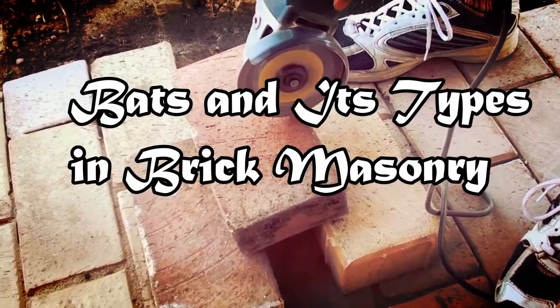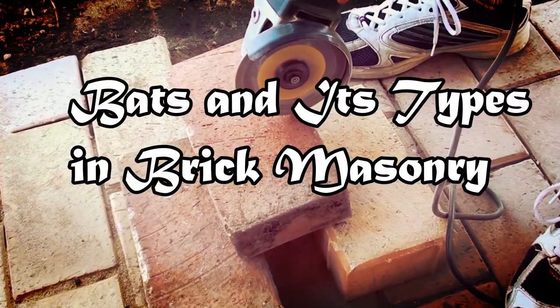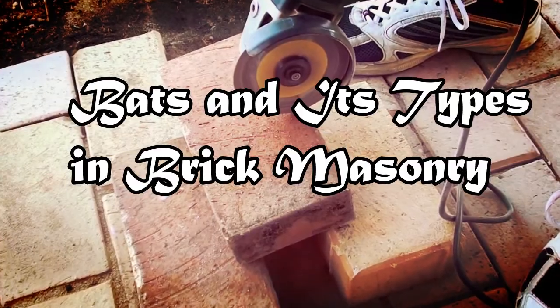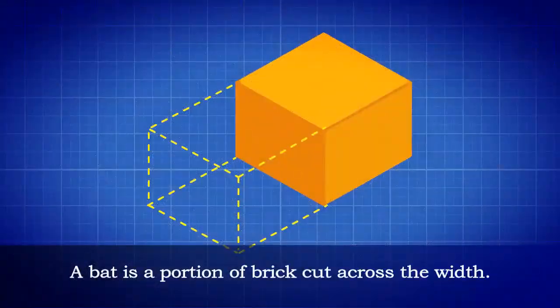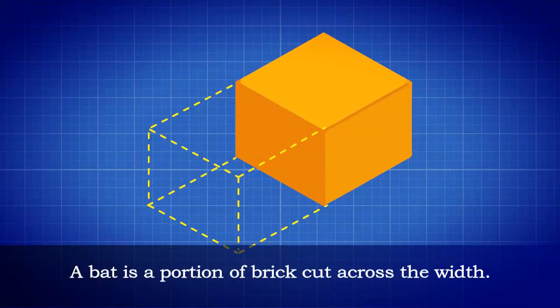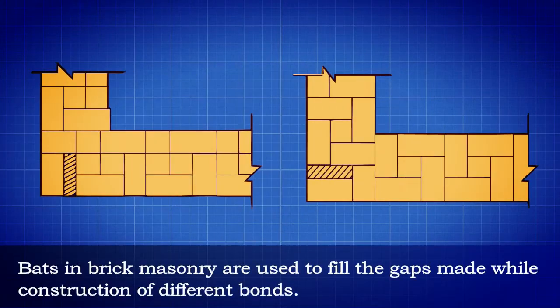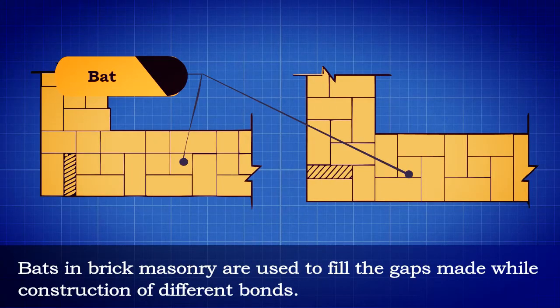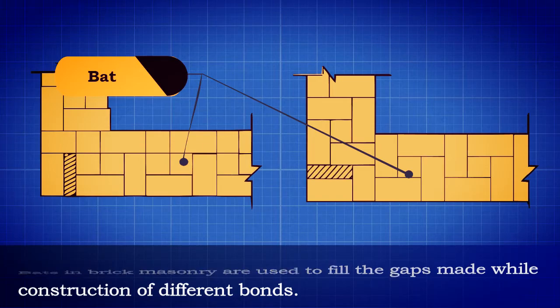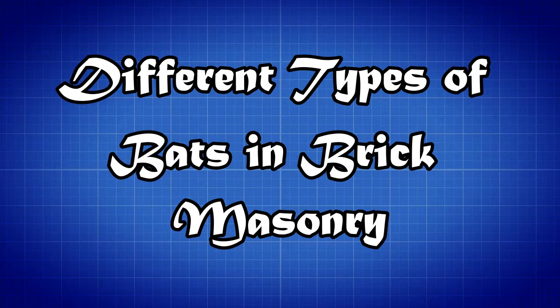Bats and its types in brick masonry. A bat is a portion of brick cut across the width. Bats in brick masonry are used to fill the gaps made while construction of different bonds.